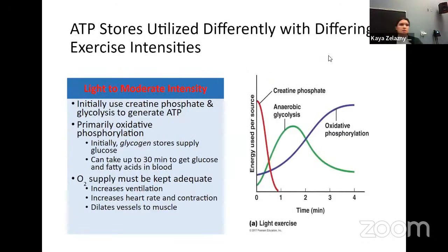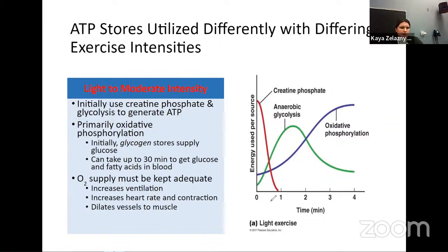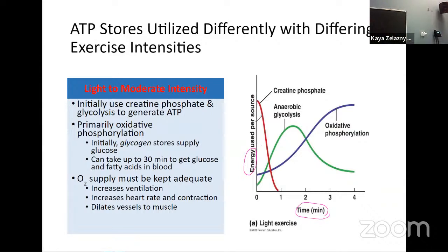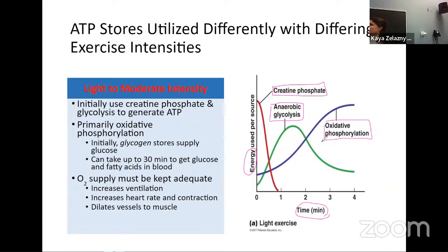As we talk about different types of exercise, we're going to be looking at some graphs over time. Our example here is light exercise. The x-axis is time in minutes — one, two, three, four minutes of light exercise. The y-axis shows where our energy — our ATP — is coming from. The three different colored lines represent our three ways of getting ATP: creatine phosphate, anaerobic glycolysis (where pyruvate turns into lactate), and oxidative phosphorylation.